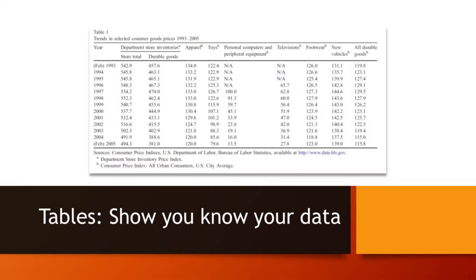Here is an example of a table — tables are very good, we like tables in economics. They should be clear; any economist should be able to understand them. This example from that paper shows inventories in stores, the different kinds of products like apparel, toys, and so on, and talks about prices — basically showing that those prices keep decreasing and as a result people consume more. That's pretty convincing.